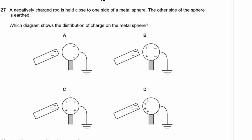Question 27. A negatively charged rod is held close to a metal sphere, with the other side earthed. Negative charges on the sphere are repelled to the far side; with earthing, those electrons can move even further away down to earth. This leaves a positive charge on the near side. Answer D.